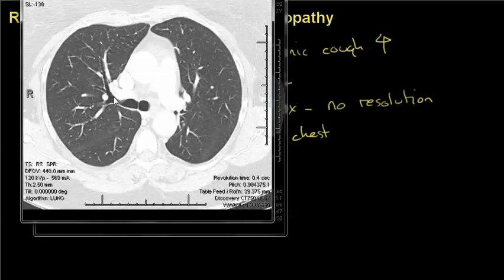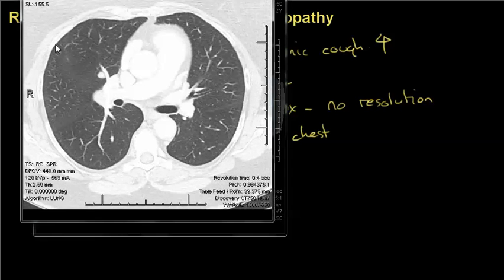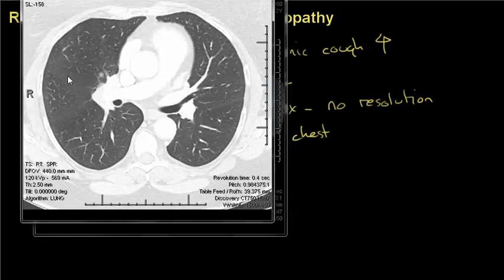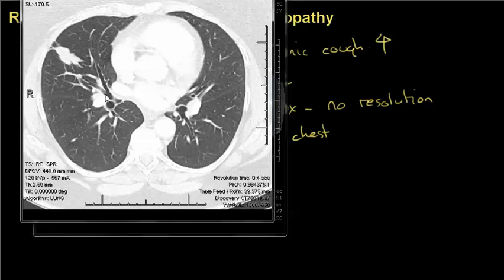This is definitely the right upper lobe. There's the right upper lobe bronchus. As I come down, the minor fissure shoots across. This is all middle lobe now. There's the middle lobe bronchus dividing into medial and lateral segments. The mass sits right between these segmental bronchi, confirming it's a middle lobe lesion.